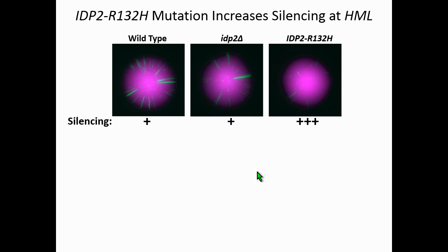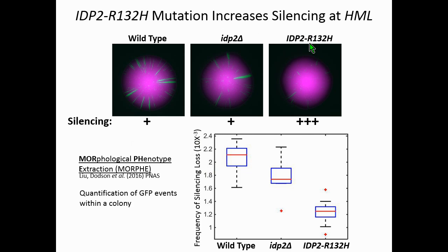When I used this assay to look at analogous mutations to those found in IDH-mutant tumors, I saw a decrease in the number of GFP sectors. We interpret that as silencing being actually stabilized or increased. We can quantify the number of GFP events in these colonies through a collaboration with Yun Song's lab at Berkeley—we developed software to count the number of GFP events—and you can see that with mutations analogous to those found in tumors, the level of GFP goes down, meaning silencing is increased.